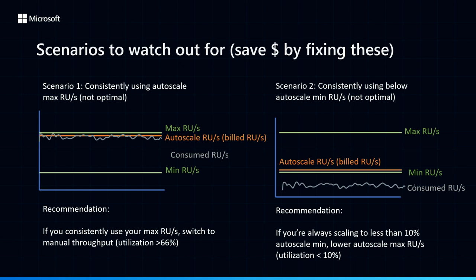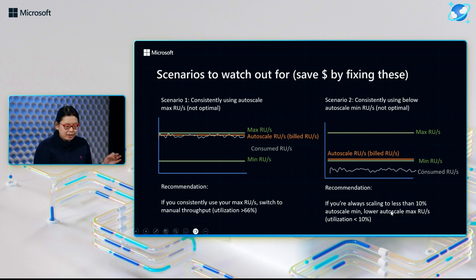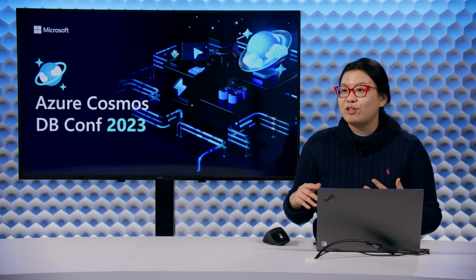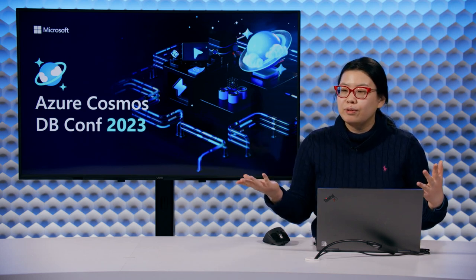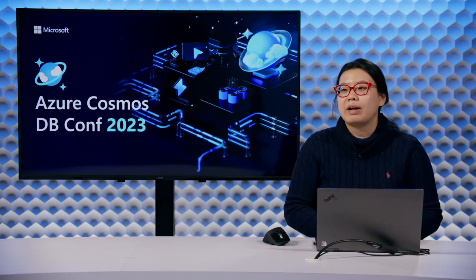The next scenario we see is that even for customers who have used autoscale, sometimes their usage is still even lower than 10% of their max RUs. If the 10x-scale range is here and your workload is down lower, that means you can actually lower this whole range and shift quite a bit, so for hours where you're not using Cosmos DB you'll actually be able to pay even less. If your utilization is averaging to less than 10% in the time period, you can save on your costs by just lowering the autoscale range — we tend to see customers lower by 5-10% at a time until they find the sweet spot.